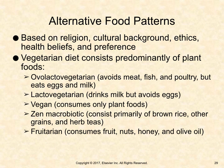Patients quite often have alternative food plans based on religion, cultural background, ethics, health beliefs, and preferences. A vegetarian diet consists predominantly of plant foods. Lacto-ovo vegetarians avoid meat, fish, and poultry, but eat eggs and milk. Lacto vegetarians drink milk but avoid eggs. Vegans consume only plant foods. Zen macrobiotic diets consist primarily of brown rice, other greens, and herb teas. Fruitarians consume fruit, nuts, honey, and olive oil.